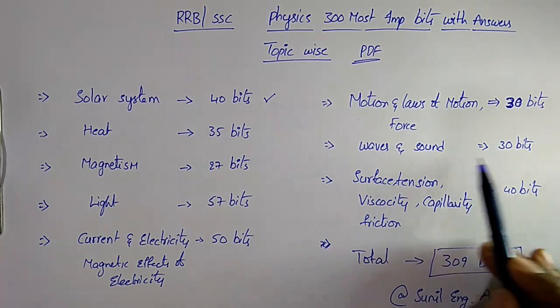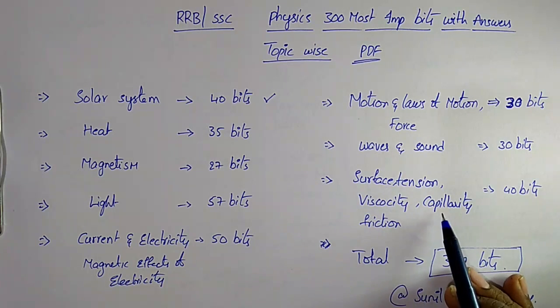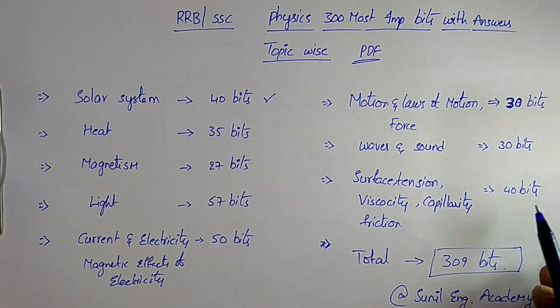Waves and sound, 30 important bits. And the topics surface tension, viscosity, capillarity and friction, total 40 bits. The total all the bits are nearly 309 bits.